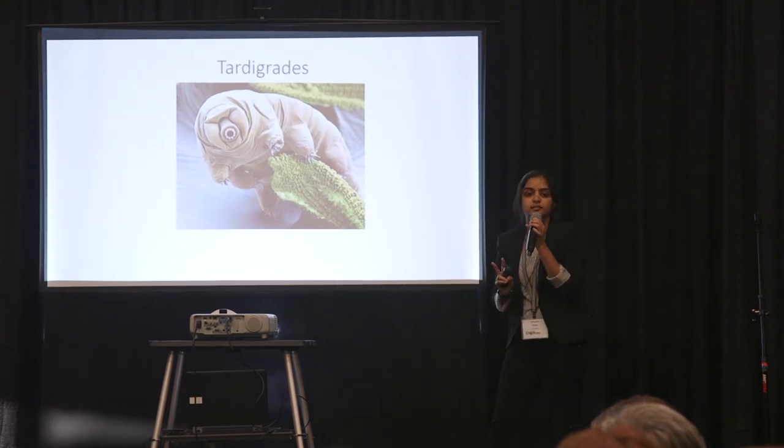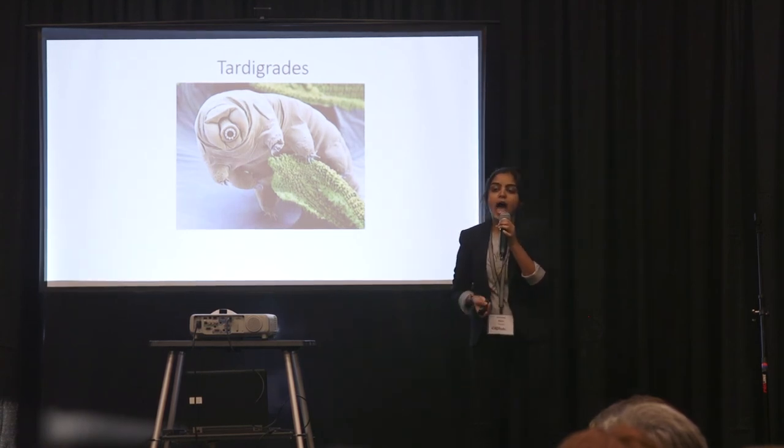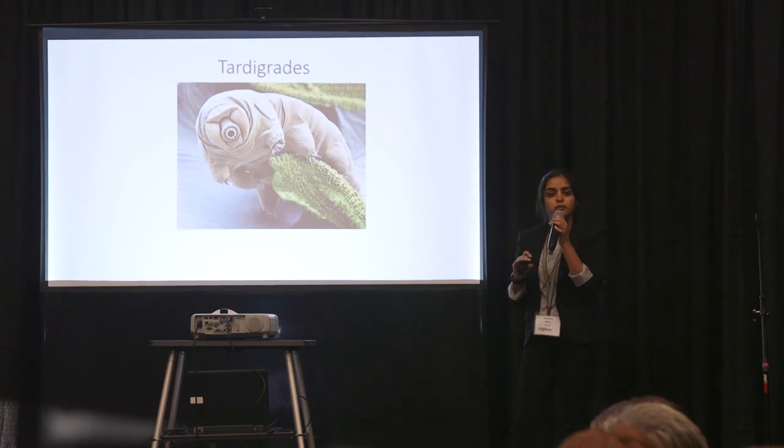And they live in two types of environments. So there are tardigrades that live in freshwater, which can be found in lakes and rivers, and tardigrades that live in the film of water that gets trapped in between lichen and a substrate.